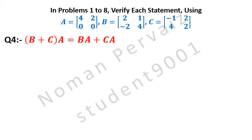In problems 1 to 8, verify each statement using matrix A having elements 4, 2, 0 and 0; matrix B having elements 2, 1, minus 2 and 4; and matrix C having elements minus 1, 2, 4 and 2. Question number 4 is: (B + C) into A is equal to BA plus CA.